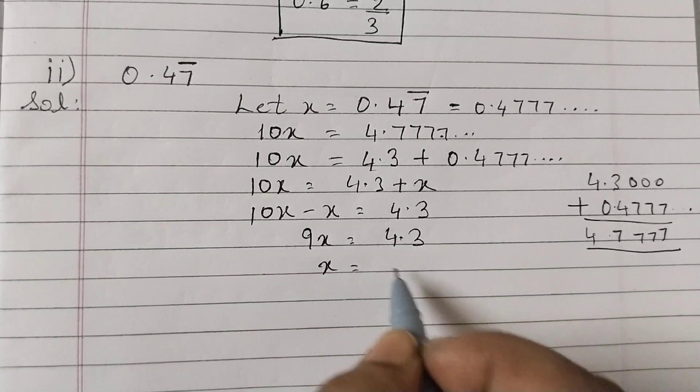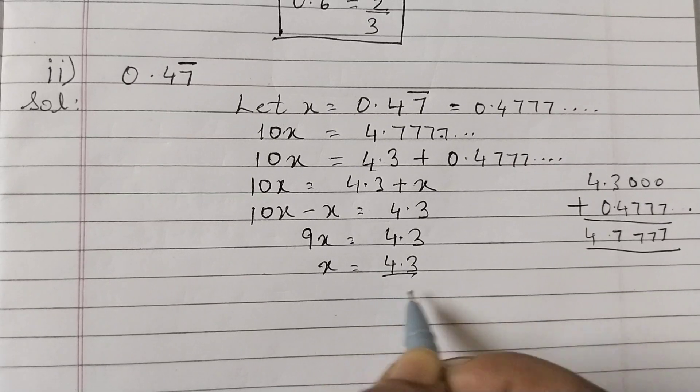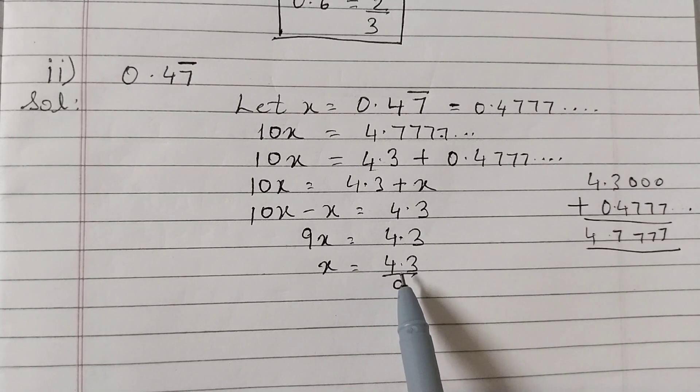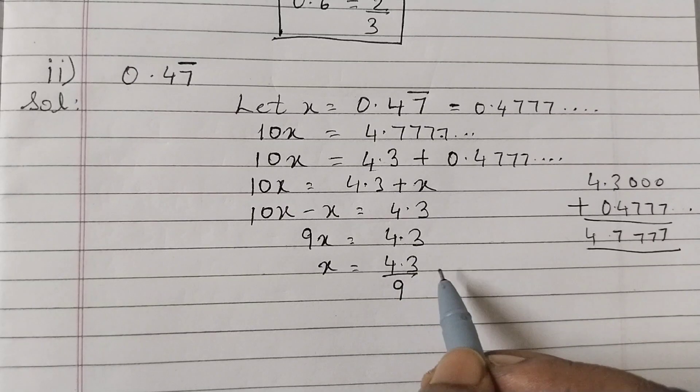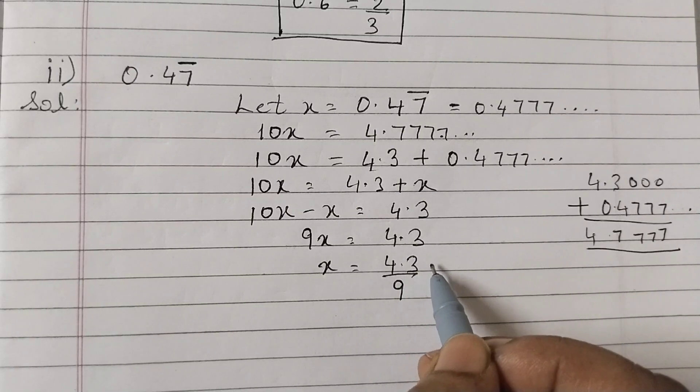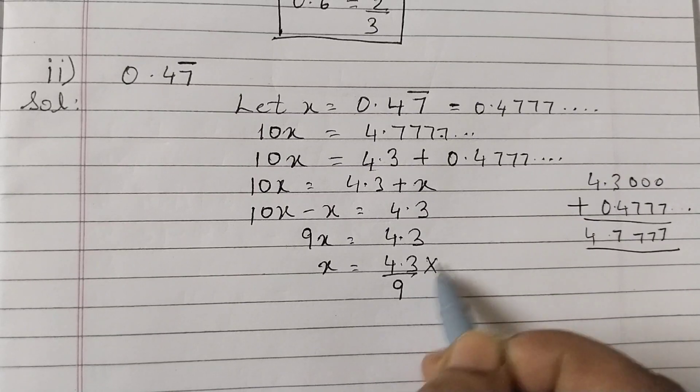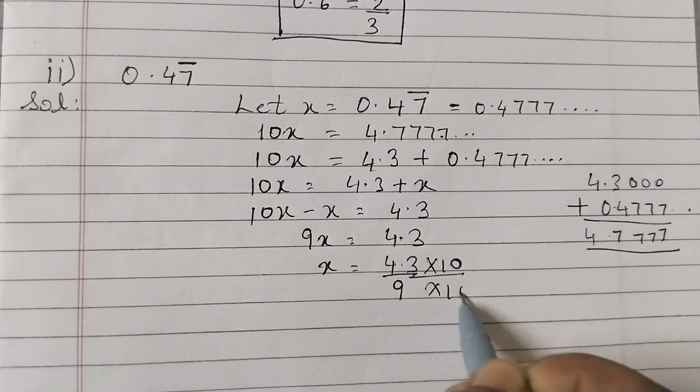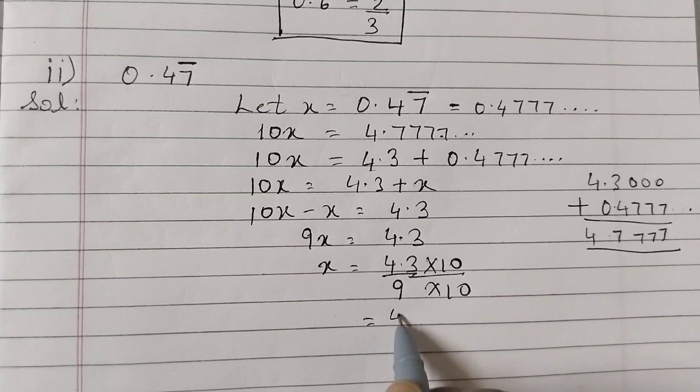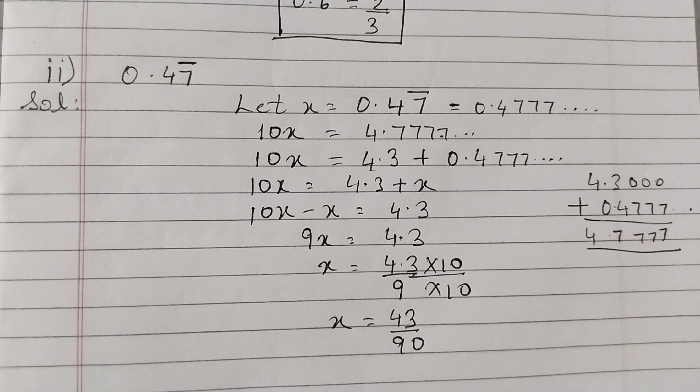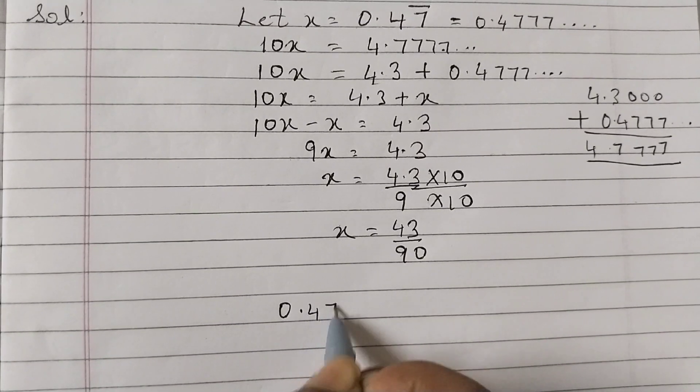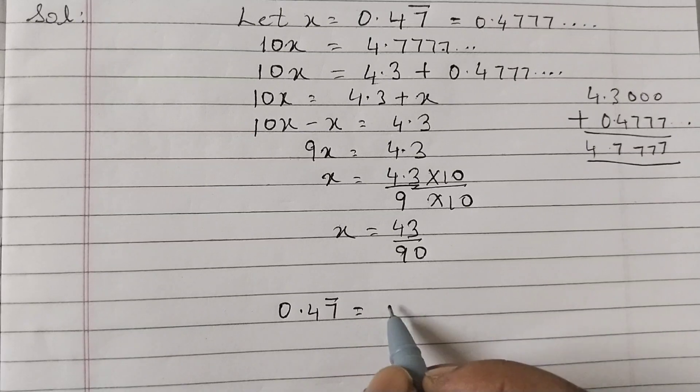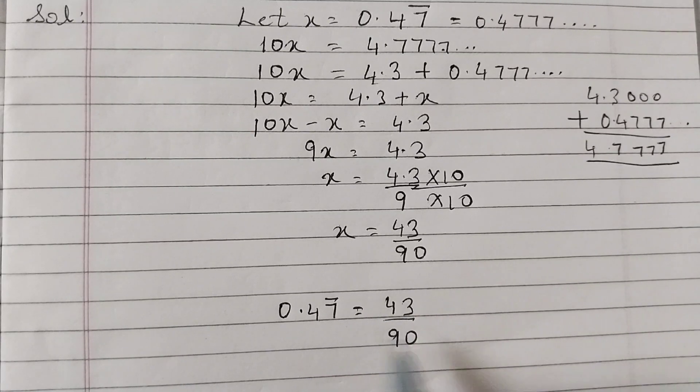x is equal to 4.3 divided by 9. We need to remove this decimal point, so multiply both numerator and denominator by 10. So this will be 43 over 90. So x is equal to 43 over 90. So our answer is 0.47̄ is equal to 43 over 90.